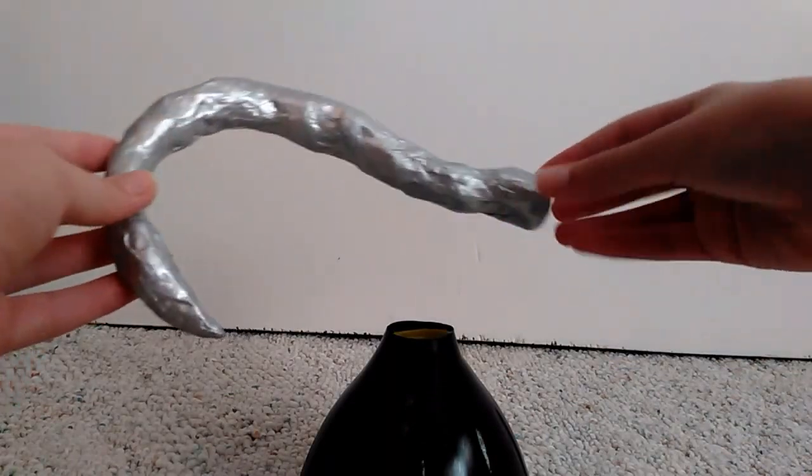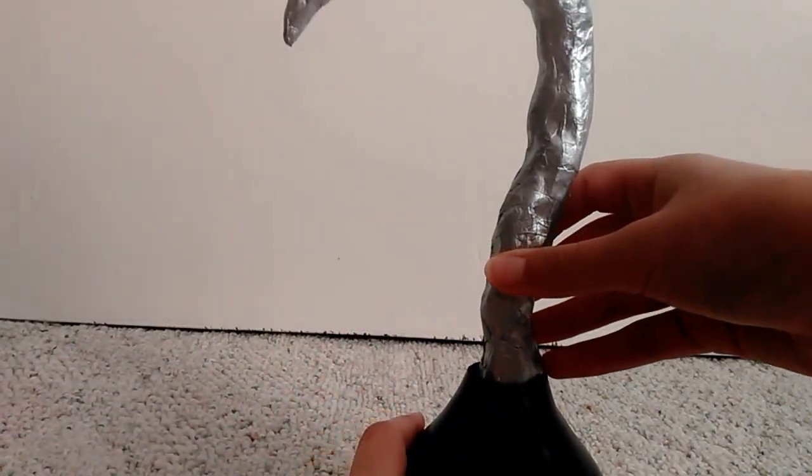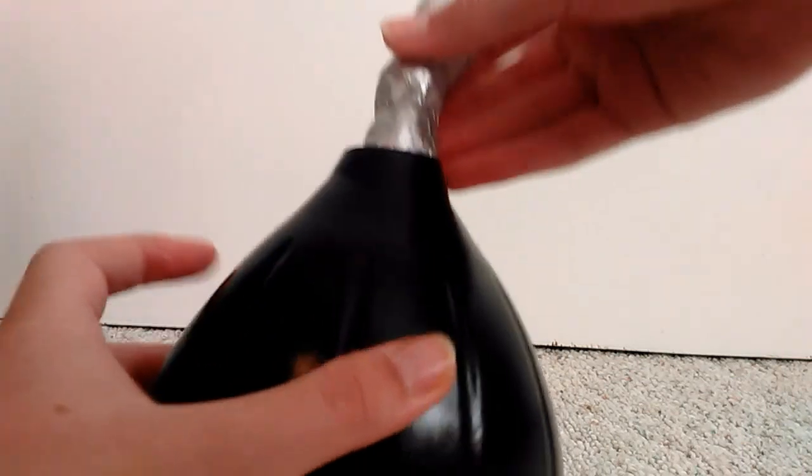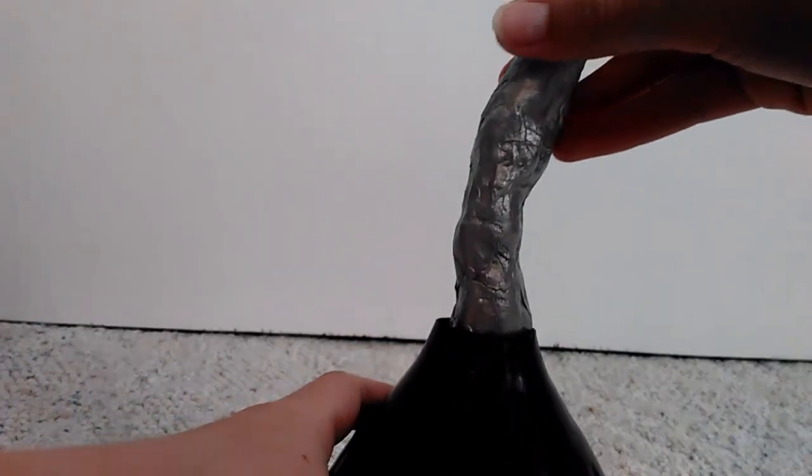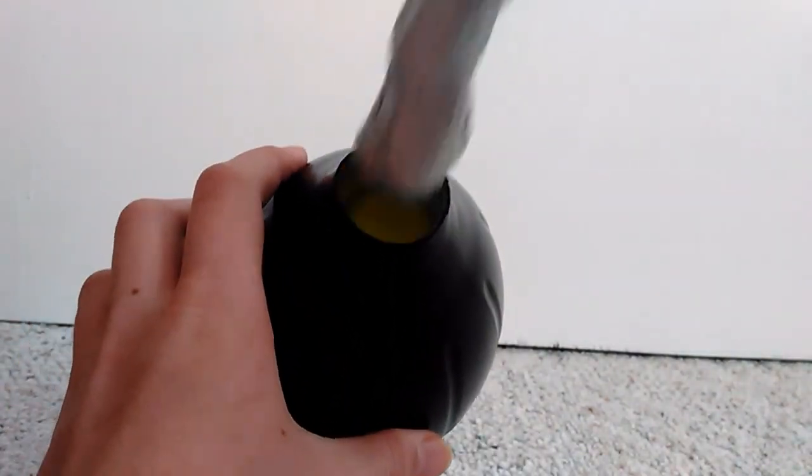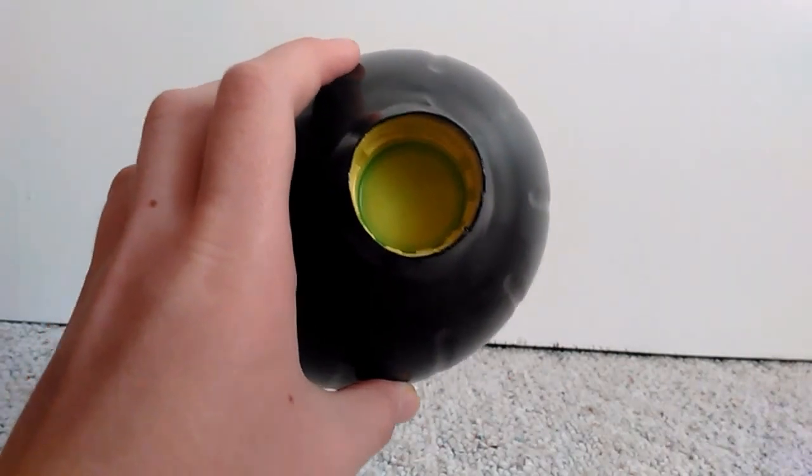So now I'm just going to glue the actual hook part into the cap. I'm just using a hot glue gun for this. I'm going to start by putting glue just all along the bottom and the sides and putting it in like that, and then I will fill in the gaps at the top with hot glue afterwards. So I will be right back.